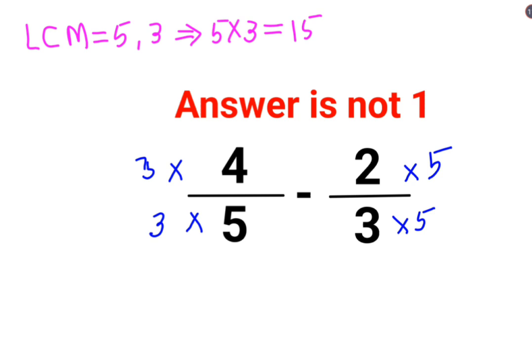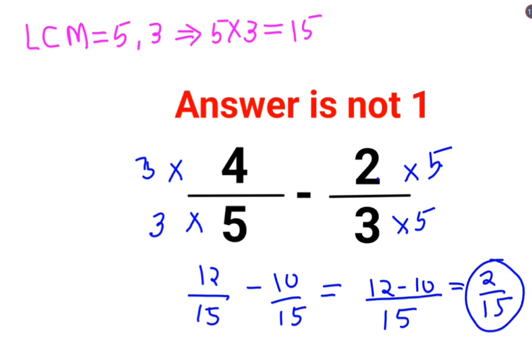So basically, you got 3 multiplied by 4 that is 12 upon 15 minus 2 multiplied by 5 which is 10 upon 15. So when you have the same denominator, you can continue the subtraction which is 12 minus 10 that gets you 2 upon 15. So the answer for this question is supposed to be 2 upon 15.